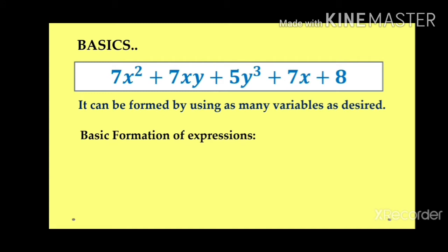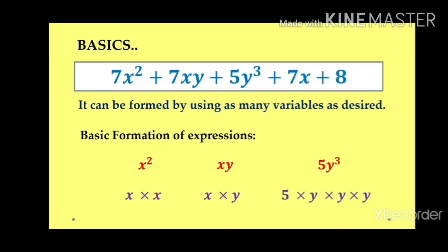Next, the basic formation of an expression — how an expression is formed. Suppose we have x². How is x² formed? x² is formed by multiplying x and x: x × x gives x². Similarly, xy means when letters are written together combinedly, so xy means x × y. And 5y³ means 5 × y × y × y, which becomes 5y³. This is the formation of expressions.